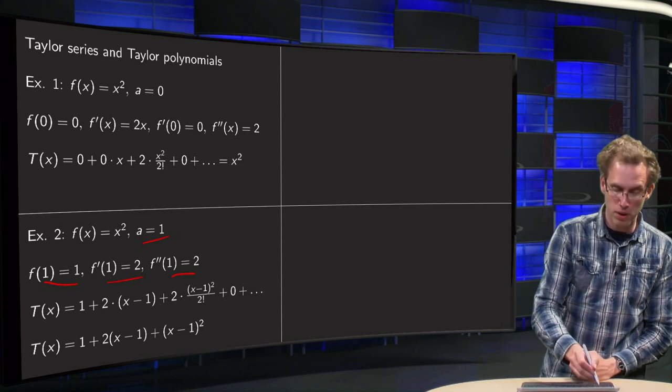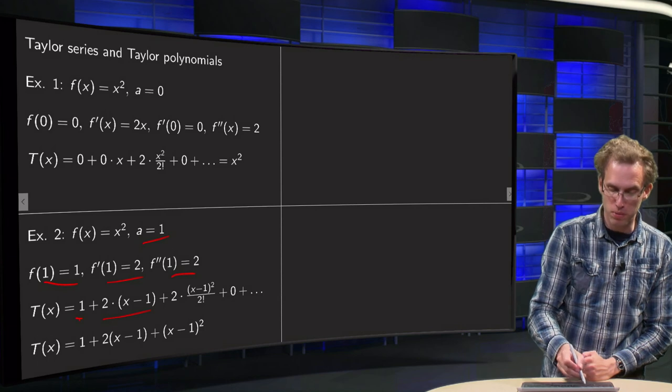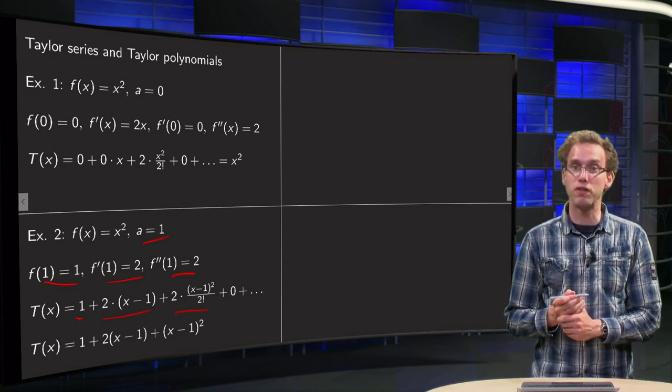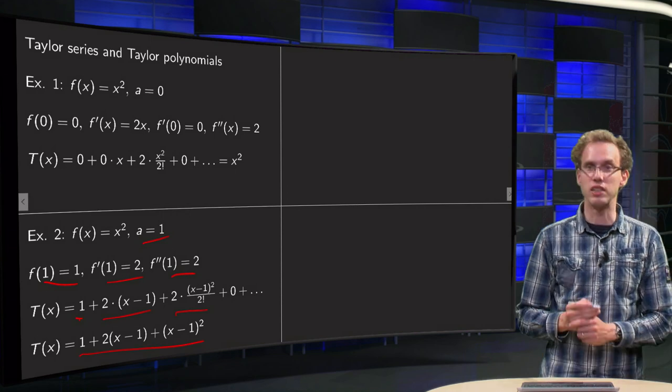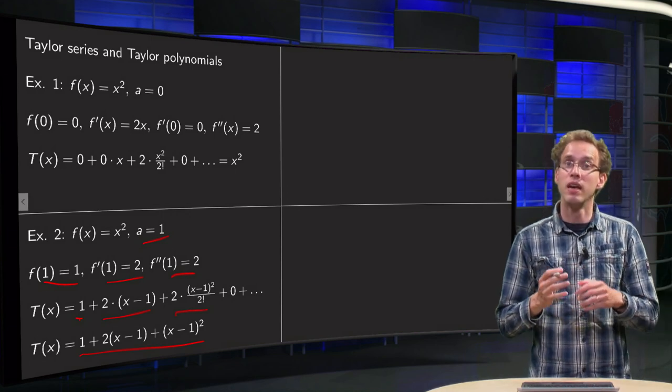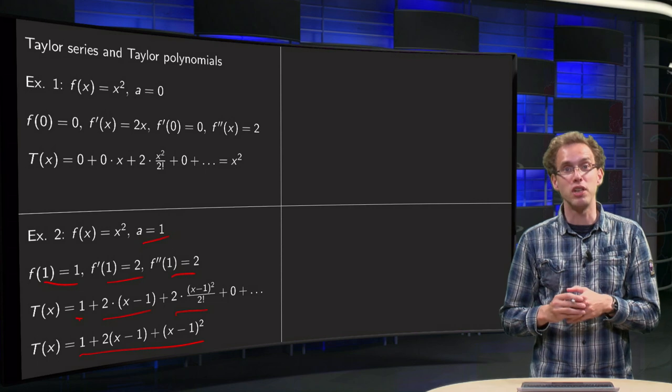So our Taylor series will be 1 + 2(x - 1) + 2(x - 1)²/2! + 0 + ... So our Taylor series will be, I guess, again, a polynomial. Yeah, and that makes sense of course, again.